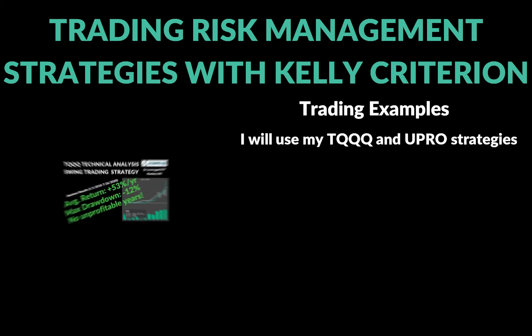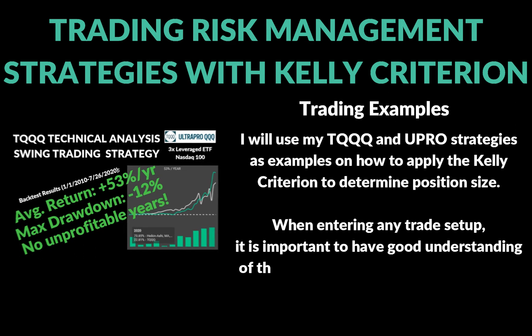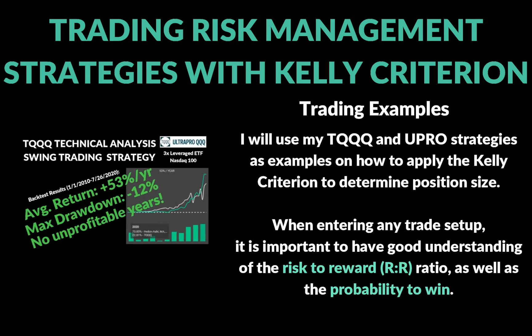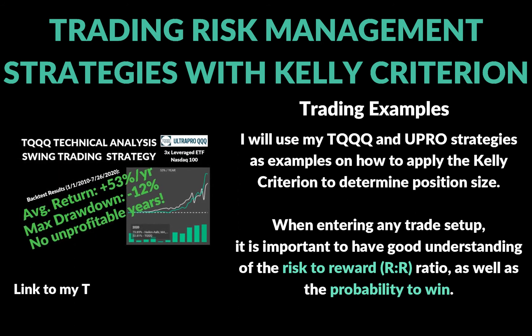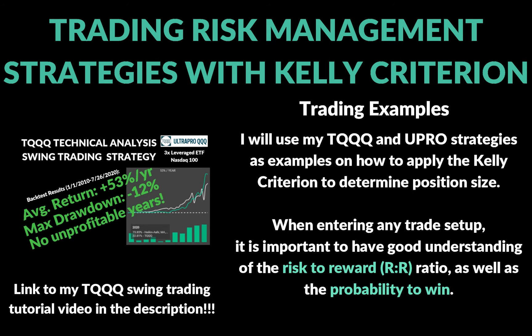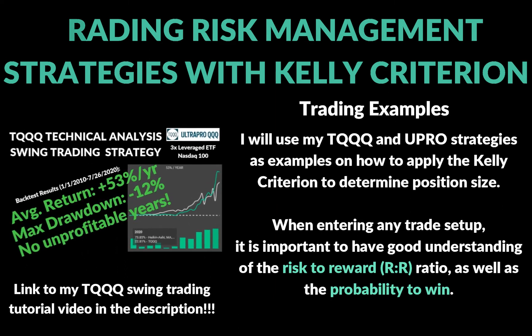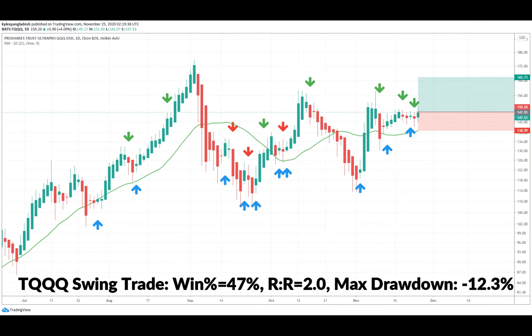I'm going to apply this to some trade setups using strategies from my other videos — two simple and effective swing trading strategies based on TQQQ and UPRO, which are leveraged ETFs based on the NASDAQ and S&P 500. For the TQQQ strategy, back-tested from 2010 to the present, I have a 47% win rate, an average risk-to-reward of two, and a max drawdown of negative 12%. Plugging those numbers into the Kelly Criterion gives us about 20%.